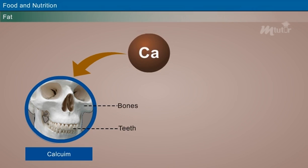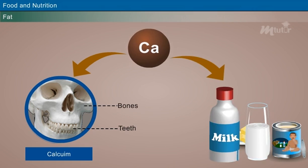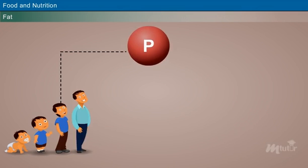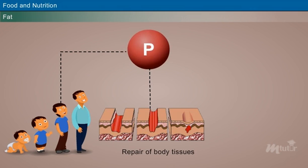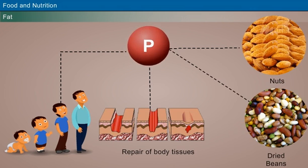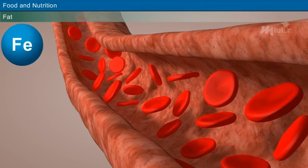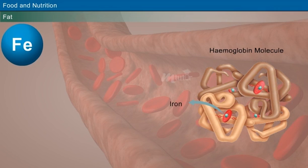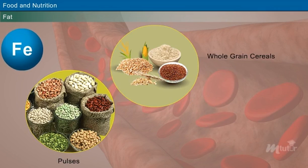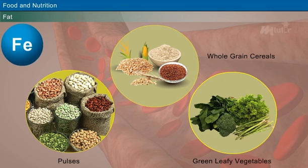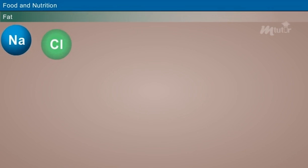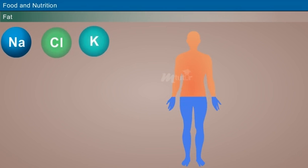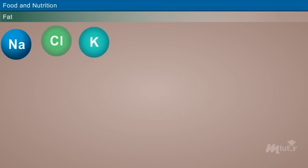Calcium: it provides hardness and strength to bones and teeth, and is present in milk and milk products. Phosphorus: it is essential for growth and repair of body tissues, and is present in nuts and dried beans. Iron: it is an important component of hemoglobin and is necessary for enzyme activation. It is present in pulses, whole grain cereals, and leafy vegetables.